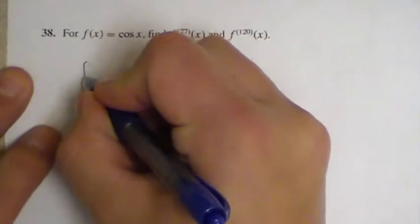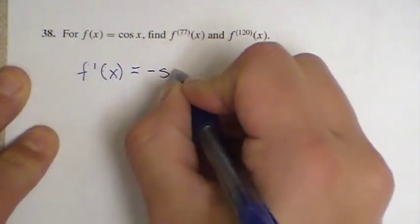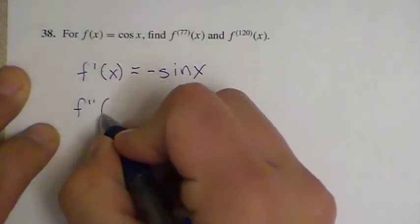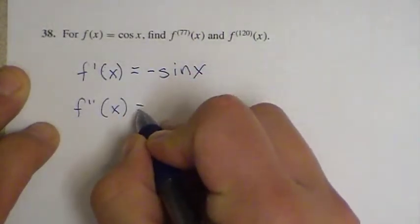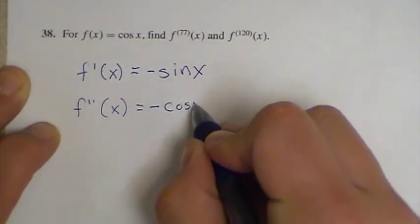But check out what happens when you start computing derivatives of cosine. The first derivative of cosine is negative sine. The second derivative of cosine would be the derivative of this. So I have a negative 1 as the coefficient, and then the derivative of sine is cosine.